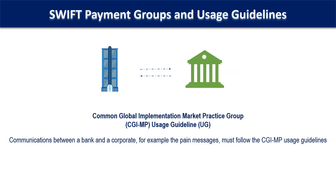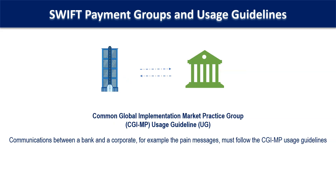The Common Global Implementation Market Practice Group, or the CGIMP Working Group, deals with corporate-to-bank SWIFT communication. So, communications between a bank and a corporate — for example, the pain messages — must follow the CGIMP usage guidelines.